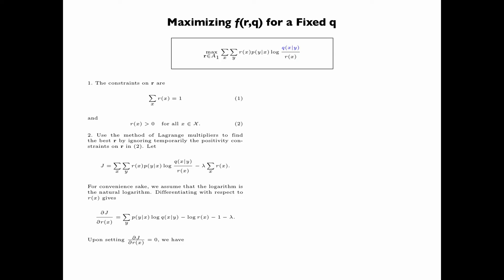Upon setting partial J by partial Rx to 0, we have log(Rx) equals summation over y P(y given x) log(Q(x given y)) minus lambda minus 1, so Rx equals e to the power minus lambda plus 1 times the product over all y, Q(x given y) to the power P(y given x).